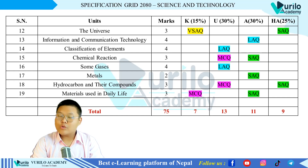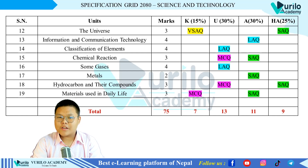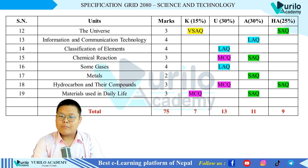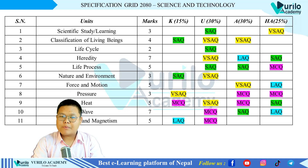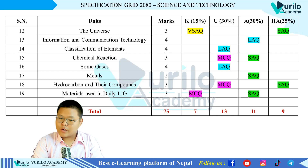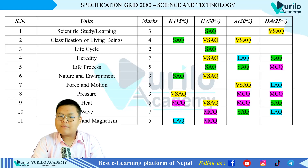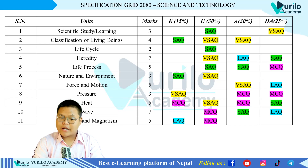For Metals, there is one short answer question worth 2 marks. Hydrocarbon and Their Compounds carries a short answer question worth 3 marks. Materials Used in Daily Life carries a 3-mark question with an MCQ or short answer question. The important chapters by marks: Heredity is an important chapter. For 7-mark chapters: Heat is the top priority. For 5-mark chapters: Life Processes, Force and Motion, Electricity and Magnetism, and Information and Communication Technology.